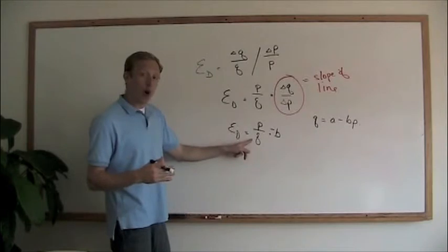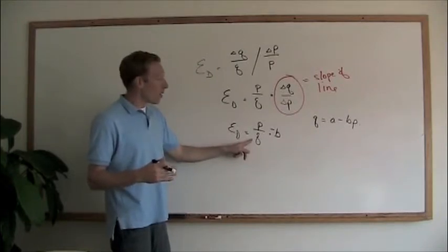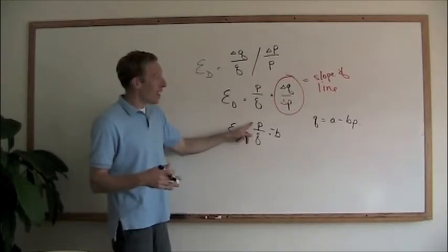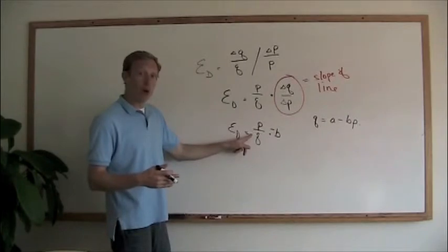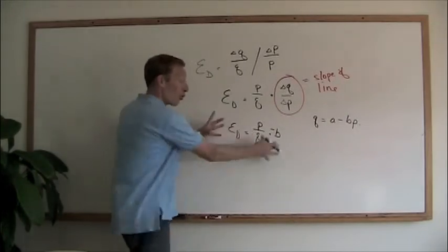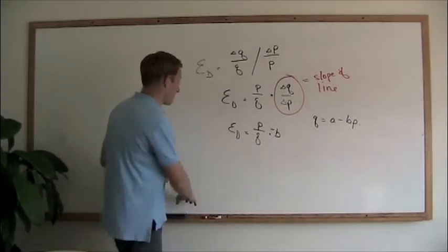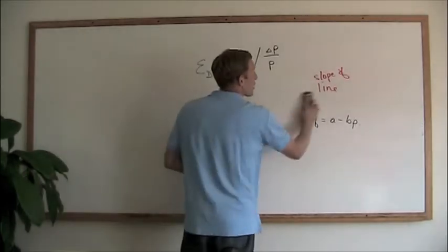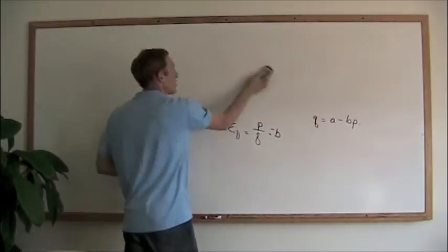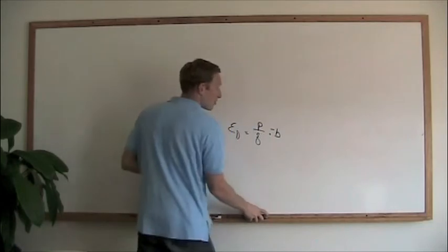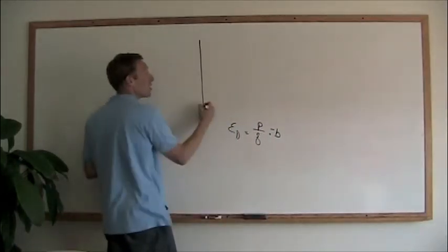If we have a price of 10 and a quantity of 1, and then we go to a price of, say, 8 and a quantity of 4, well, this whole thing is going to change. And that means that if we look at a demand curve, the elasticity along that curve is also going to be continually changing.